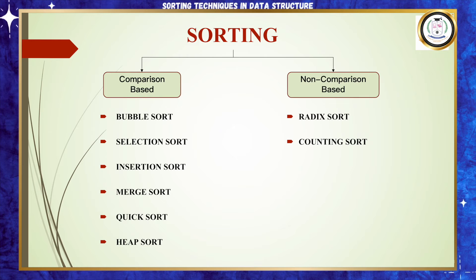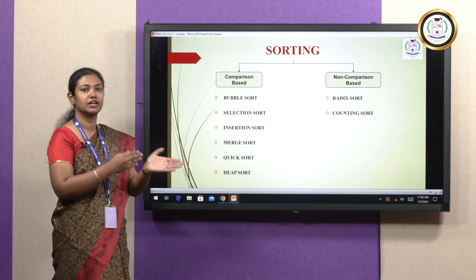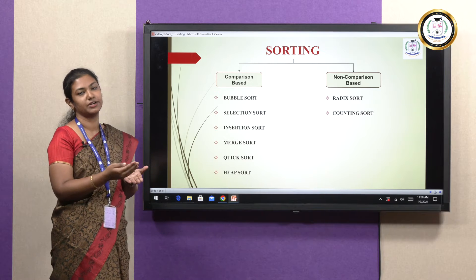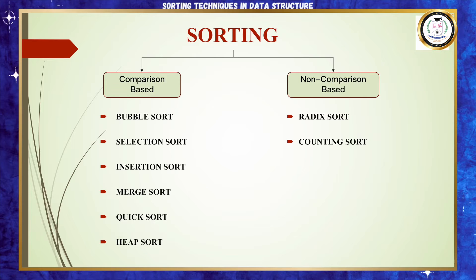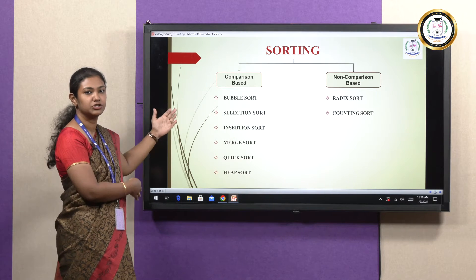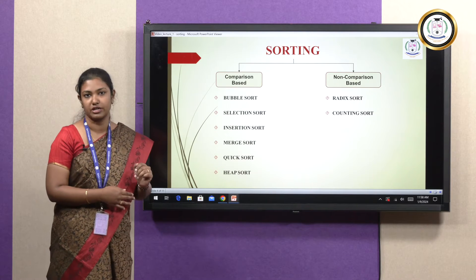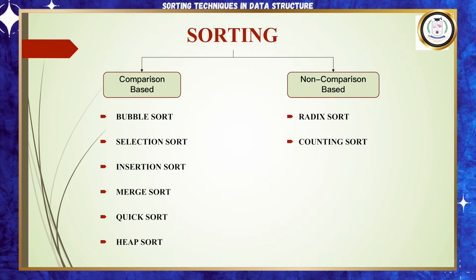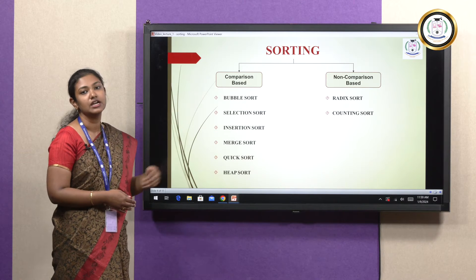We will again categorize sorting into comparison based and non-comparison based. Comparison based sorting is when there are many elements grouped together and you compare one element with another element. All sorting mechanisms that compare between two elements come under comparison based sorting. Whereas in non-comparison based, you do not compare elements as much as in comparison based sorting. Some comparison based sorts are bubble sort, selection sort, insertion sort, merge sort, quick sort and heap sort. Non-comparison based are radix sort and counting sort.